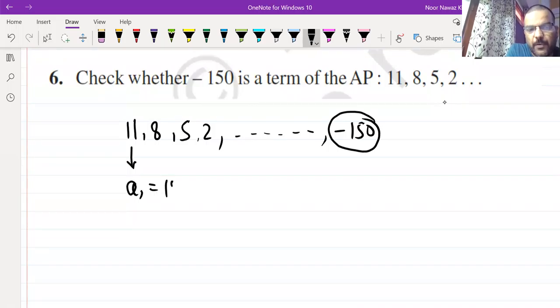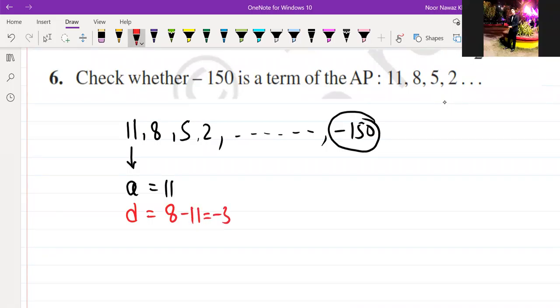A is our 11. If our A is 11, then D can also be removed. 8 minus 11, keep your attention. Minus 3.